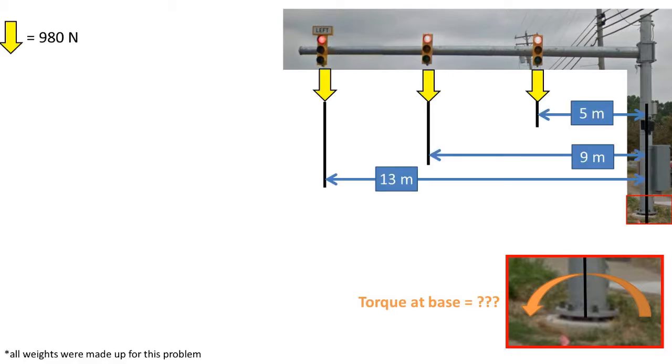We have three stoplights that have a weight of 980 newtons each and they are at 13 meters, 9 meters, and 5 meters from the center of the base. The weight of the cantilevered beam holding the streetlights up is 3920 newtons and has a center of mass at 7 meters away from the center of the base.